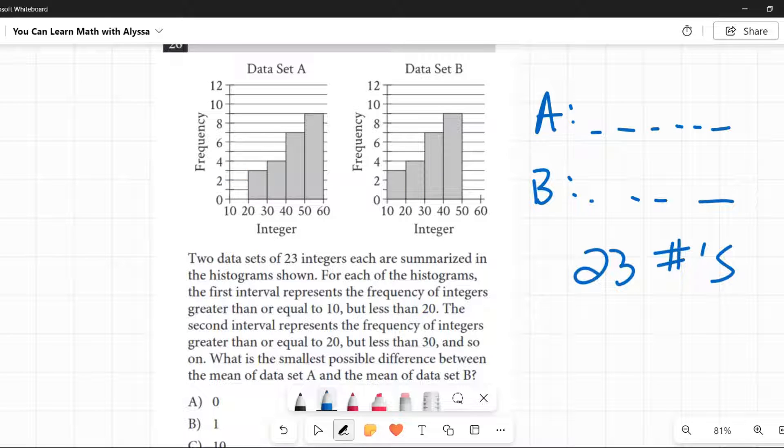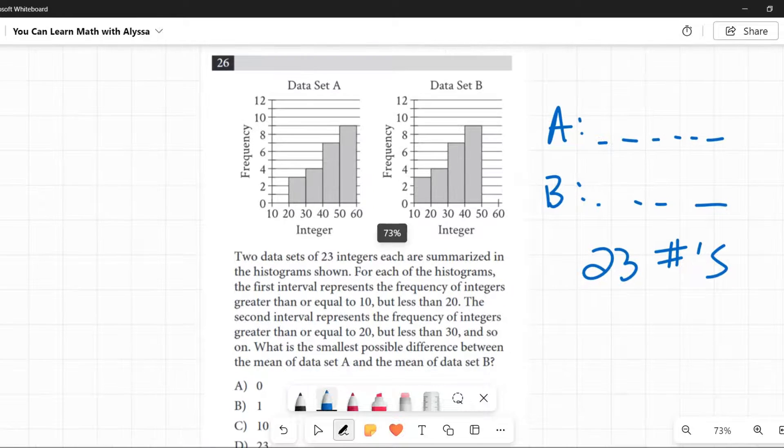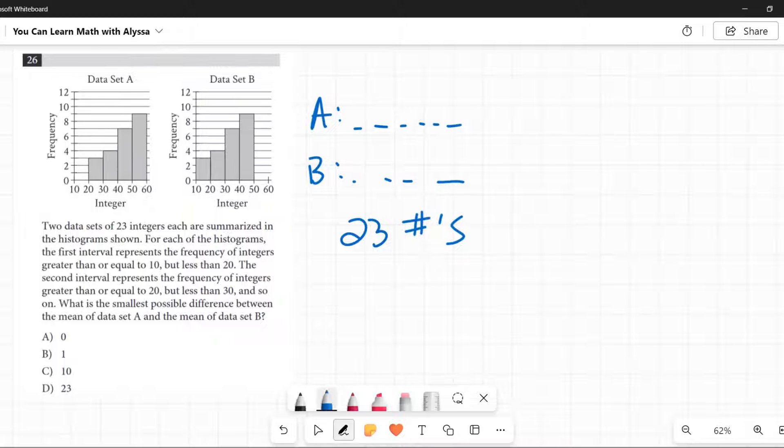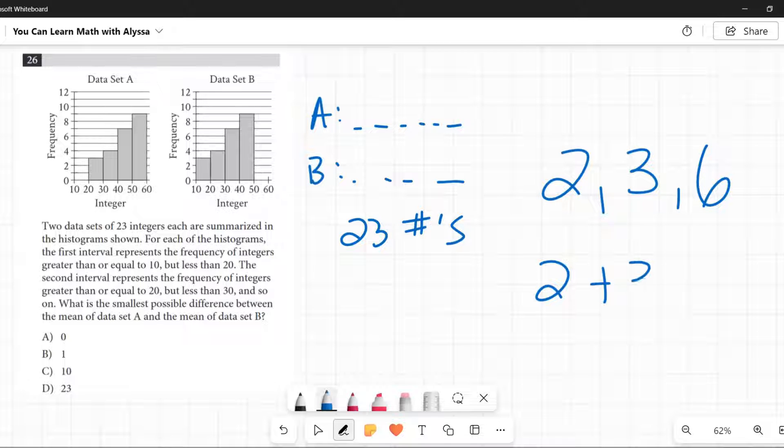All right, so now they're asking, what is the smallest possible difference between the mean of data set A and the mean of data set B? How do we find the mean of a set of numbers? I could say if I had 2, 3, and 6, how would I find the mean? I'm going to add those together and then divide by the number of terms. So I had one, two, three terms. So 2 plus 3 plus 6 is 11 and I would divide 11 by 3, which would give me 3 and 2/3. And that would be my mean.